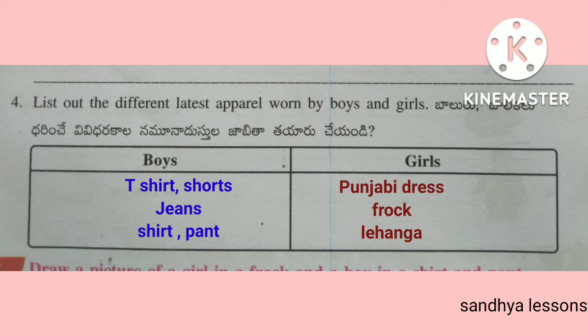List out the different latest apparel worn by boys and girls. Boys wear t-shirt, shorts, jeans, shirt, pant. Girls wear panjabi dress, frock, lehenga, etc.